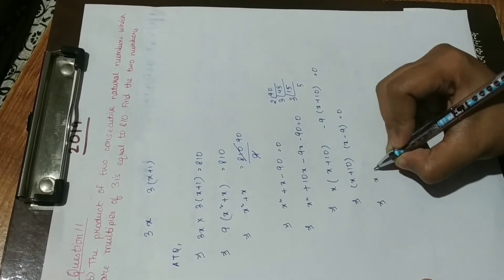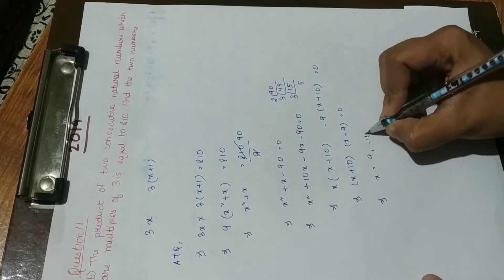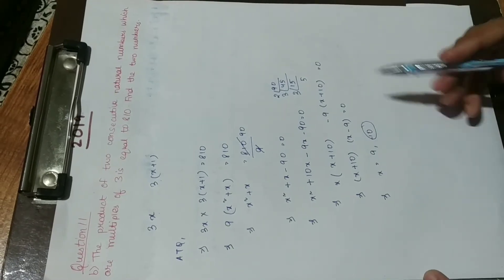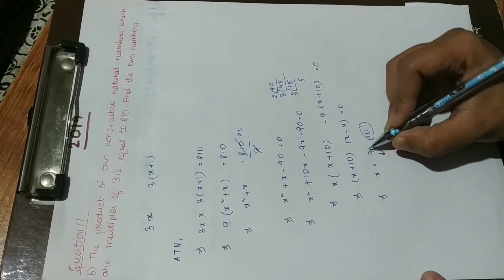From here we are getting x is equal to either 9 or minus 10. So since we have been said that they are natural numbers, this answer is not applicable. So of course our x has the value of 9.